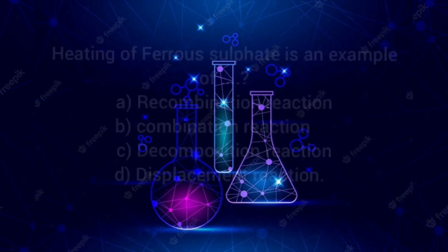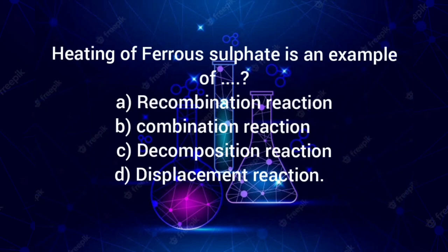Seventh question: The heating of ferrous sulphate is an example of — (a) recombination reaction, (b) combination reaction, (c) decomposition reaction, or (d) displacement reaction?